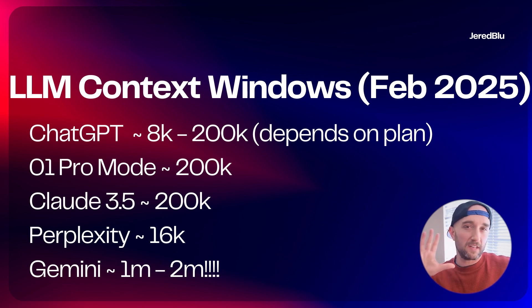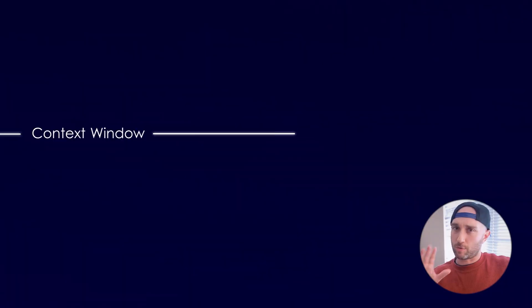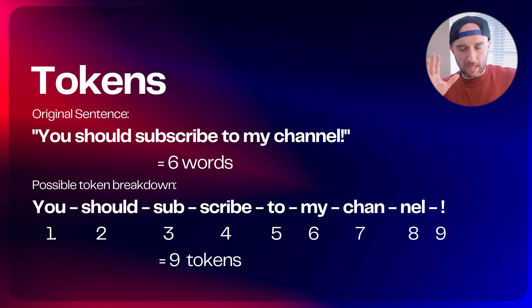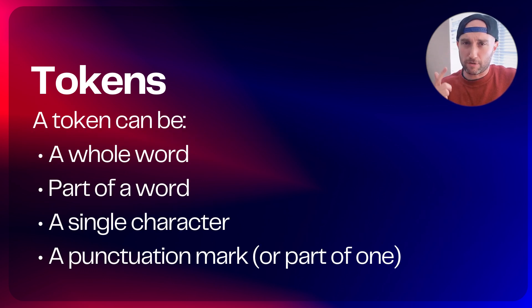So what are tokens? Tokens are how AI sees words. They don't interpret text the way we do — they break words down into tokens. In general, a token is about three-fourths of a word, though this varies between models. A token could be a full word, part of a word, a single character, or even punctuation. Knowing that each model is limited by its context window, the longer your conversations get, the smaller your context window becomes. So I strongly advise you to keep conversations short and to the point, and start new conversations often, because then the context window starts over.